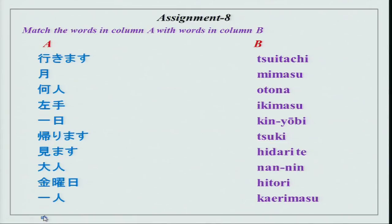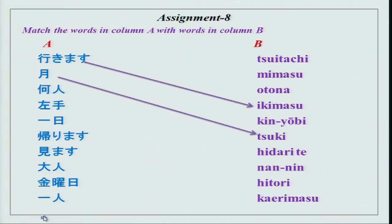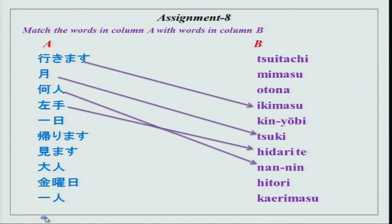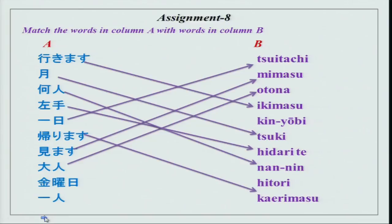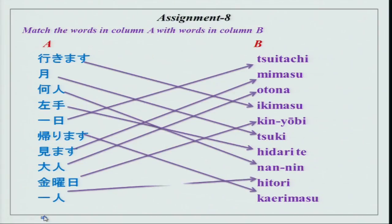Assignment 8: match column A with column B. You have kanji characters here and meanings in roman script. Ikimasu; tsuki is moon; nan nin means how many; hidari te means left hand; tsuitachi means first of the month; kaerimasu is to return; mimasu is to see; otona is an adult; kinyoubi is Friday; hitori is one person. I hope you have checked all of it and will not make the same mistakes again.